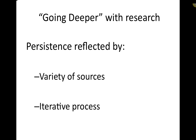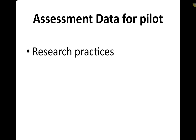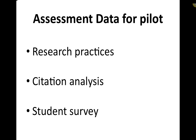Persistence rose to the top as a quality employers want in grads who are information seeking. That informed how I decided to assess the Wikipedia project. The definition of persistence sometimes came out from employers wanting grads able to use a variety of sources, understanding that information seeking is iterative — not just one search and you're done — that you often have to refine and reflect. So I decided to look at research practices: I did a citation analysis of their sources to look at variety, how many different types of sources they were using, and I also had a student survey for one section.